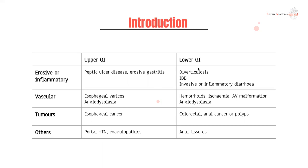For lower GI bleeds, typically things like diverticulosis, inflammatory bowel disease — so your UC and Crohn's — and then invasive or inflammatory diarrhea. We talked about dysentery in our lecture on gastroenteritis. In terms of vascular causes: angiodysplasia, hemorrhoids, ischemia, AV malformations. Note that angiodysplasia appears as both an upper and lower GI bleed cause — it's one of those that's really hard to pick up and annoying when it comes to clinical management.